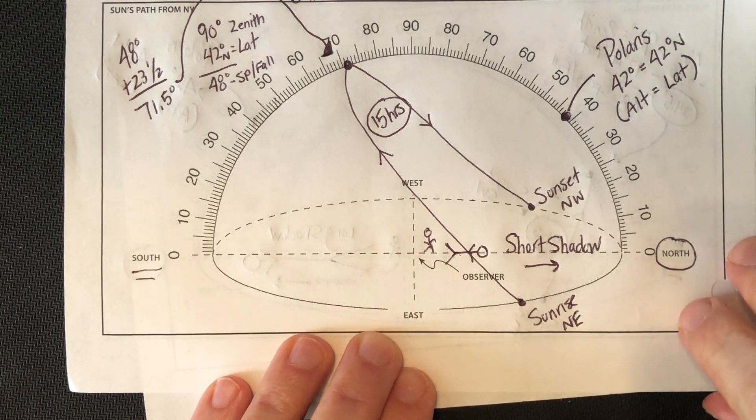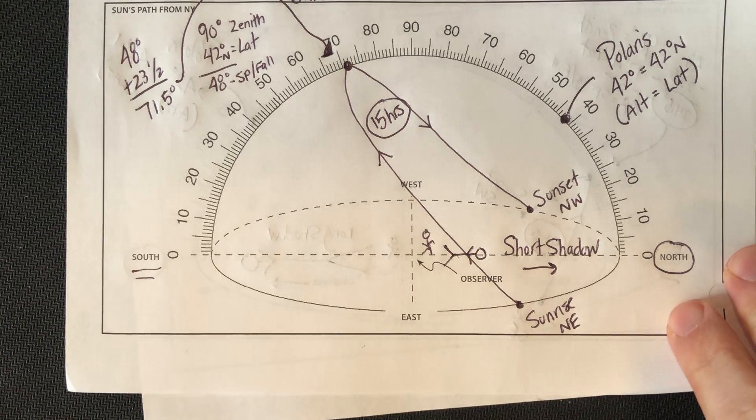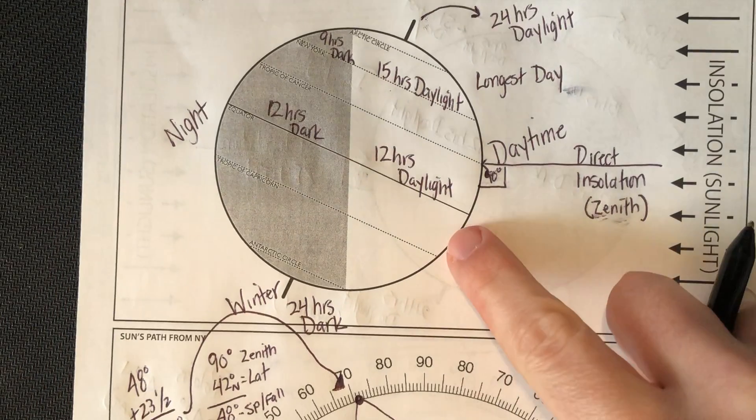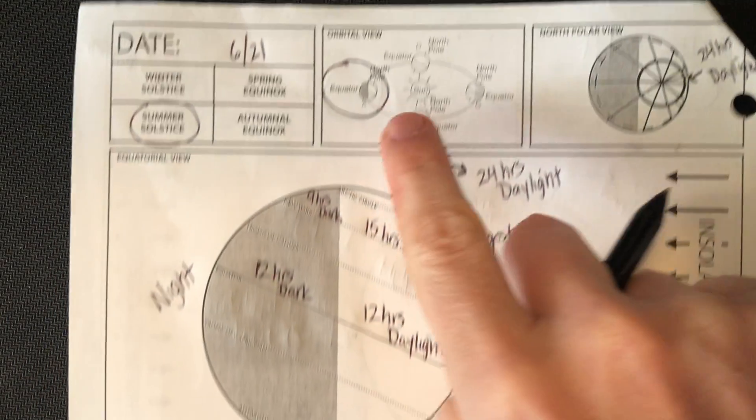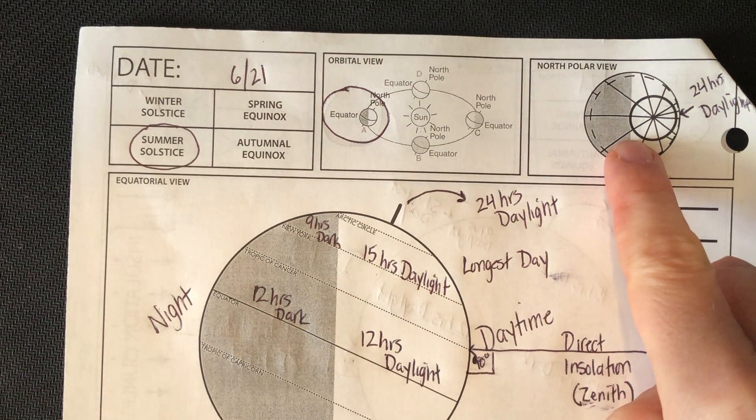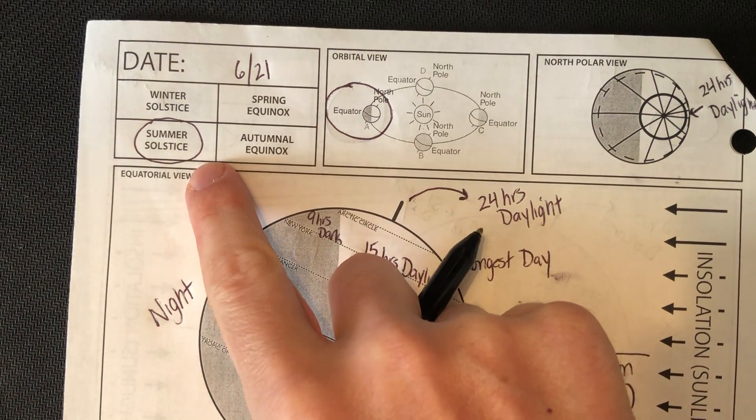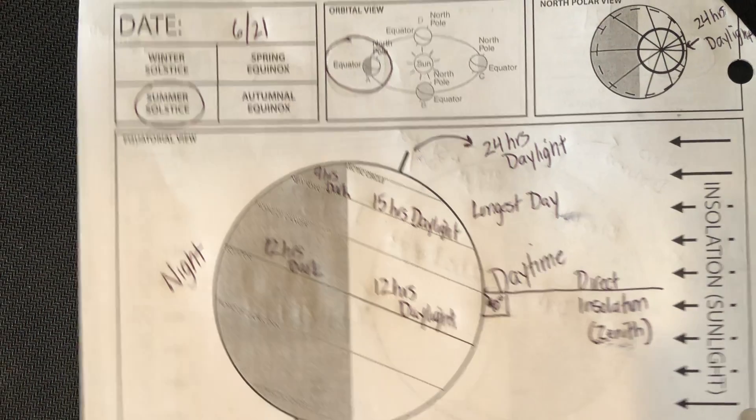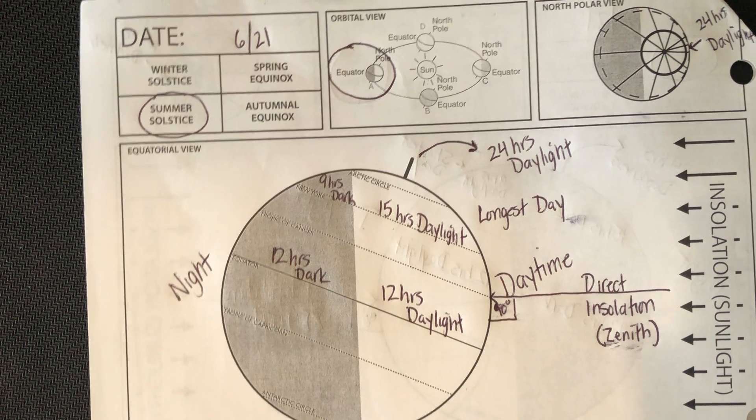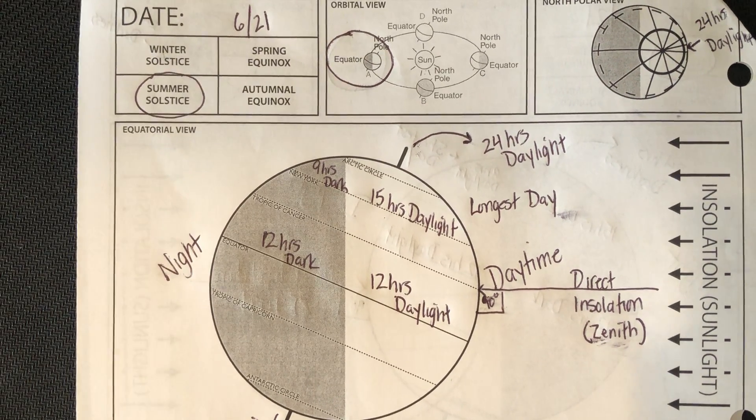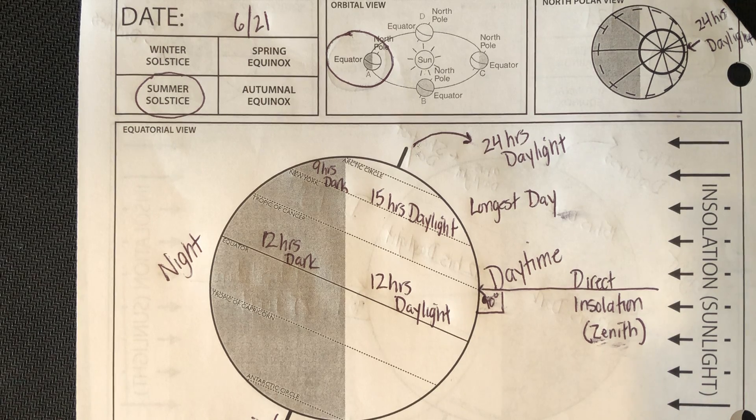So, again, sun's path perspective, equatorial perspective, orbital perspective, polar perspective from the North Pole. This is the summer solstice, June 21. Definitely recommend checking out my other video on winter just because you can see just a complete contrast between the two seasons. Thanks for joining me, guys. Please check out my spring and fall coming up next.